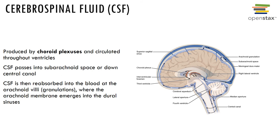There are four ventricles of the brain: two lateral ventricles — a right and a left — each within one of the cerebral hemispheres; a third ventricle located in the diencephalon; and a fourth ventricle that begins in the metencephalon and extends into the superior portion of the medulla oblongata, then narrows and is continuous with the central canal of the spinal cord. CSF is reabsorbed into the blood where the arachnoid membrane emerges into the dural sinuses.